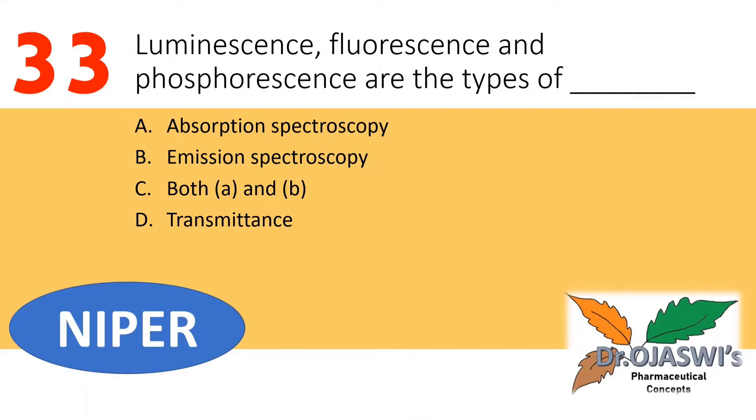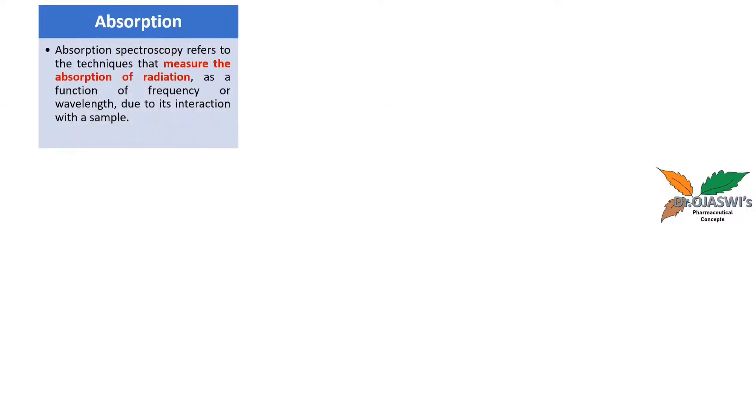The next question is about luminescence, fluorescence, and phosphorescence. These are the types of which among the following techniques: whether it is absorption, emission, both, or transmittance. Let's see what these three terms mean. Absorption refers to the technique that measures the absorption of radiation as a function of frequency or wavelength due to its interaction with the sample.